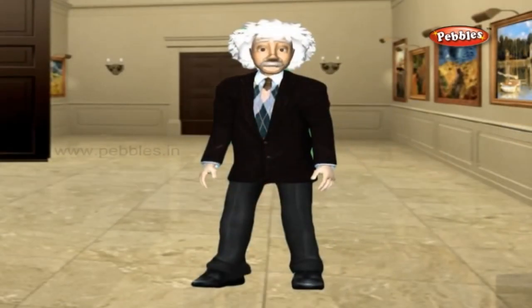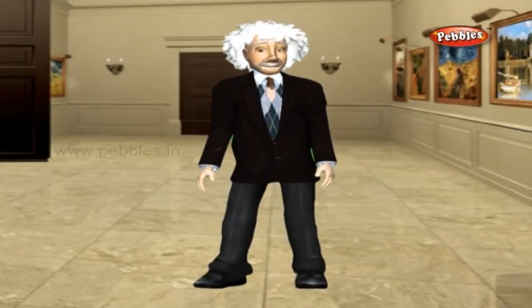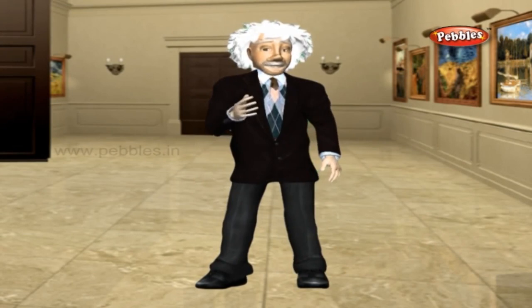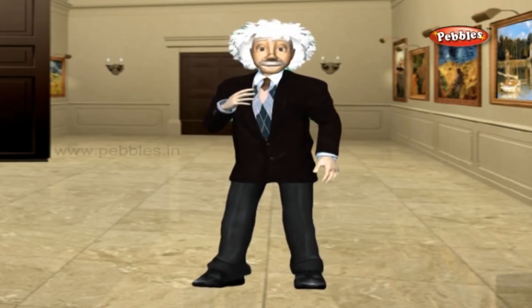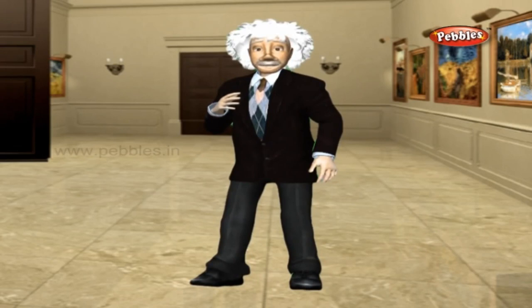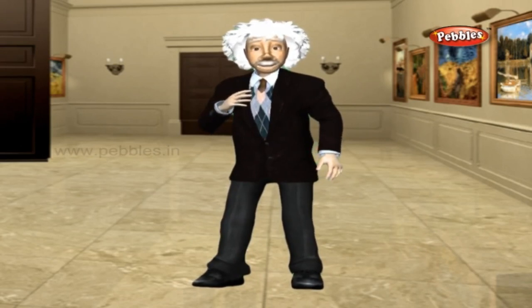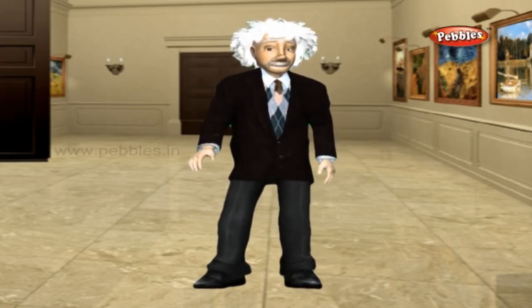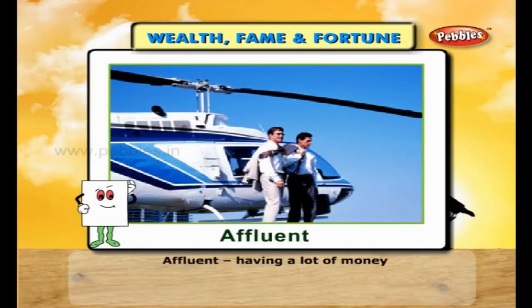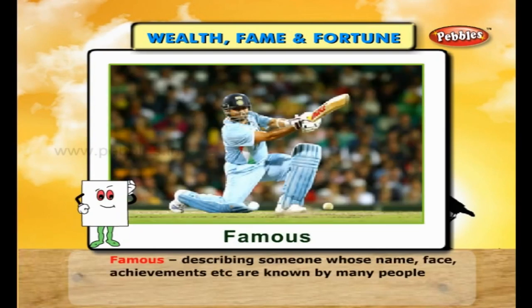Let us understand wealth, fame and fortune. Wealth means money; fame is becoming popular, and fortune is luck. Affluent means having a lot of money. Famous describes someone whose name, face and achievements are known by many people. A celebrity is a famous person who is known to many people. Good luck is used to tell someone you hope they will succeed in something they are about to do. Chance is a situation in which things just happen in a particular way without human effort or interference.